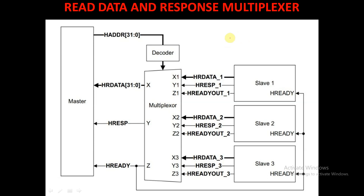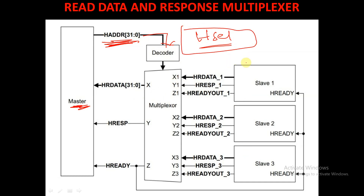Next, let's discuss the read data and response multiplexer. Here we have a single master which wants to communicate with multiple slaves. The address information is given to the decoder, and according to this address information, the HSELx signal is used to select a particular slave. After selecting a particular slave — for example, slave 1 — slave 1 responds with the signals H-ready out, H-response, and HR data.